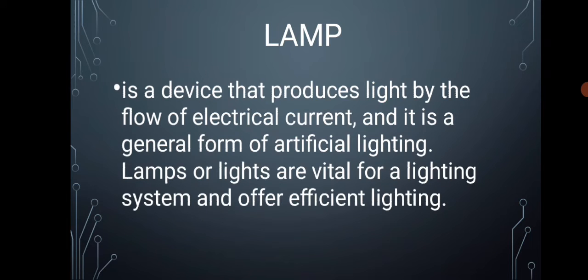Now, let's talk about what a lamp is. A lamp is a device that produces light by the flow of electrical current, and it is a general form of artificial lighting. Lamps or lights are vital for the lighting system and offer efficient lighting. Most lamps use electricity and a light bulb to shine the light. We all need to work and live comfortably after daylight fades. Your desk lamp can provide enough light for you to read by at night, and you can turn on the floor lamp after the sun goes down.